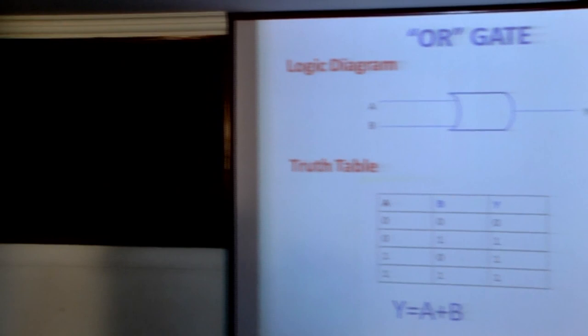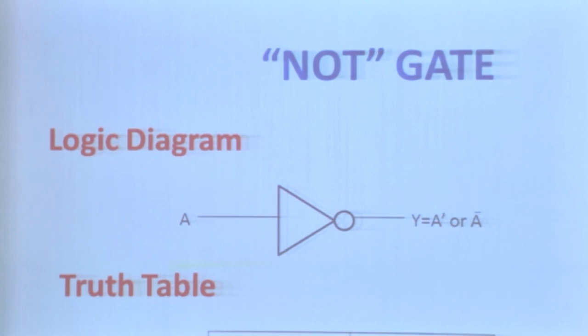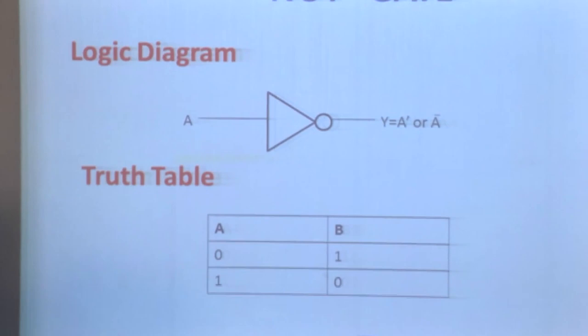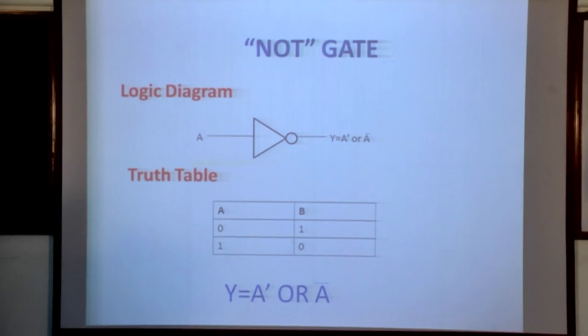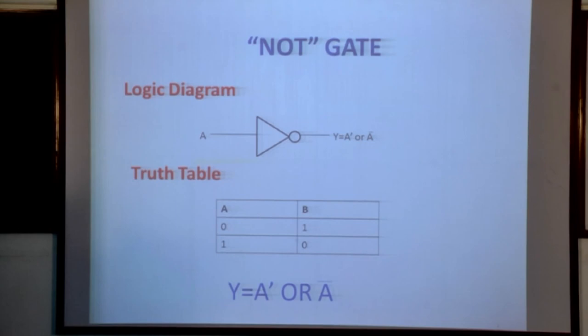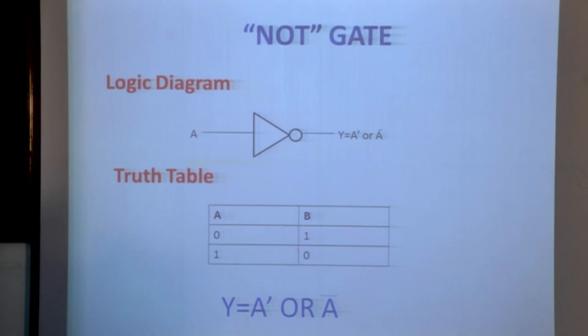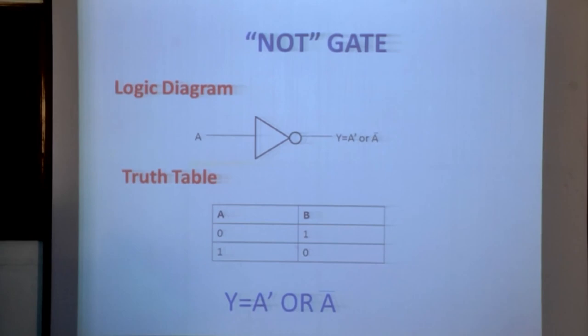The next gate is the NOT gate. The expression of the NOT gate is represented as Y equal to A-bar. This NOT gate is also called an inverter gate because it inverts the given value — it reverses the binary value. See the truth table: it takes only one input and one output. If the input is 0, then the output is 1. If the input is 1, then the output is 0. In other words, 0 means false and 1 means true — if the input is false, the output is true, and vice versa.